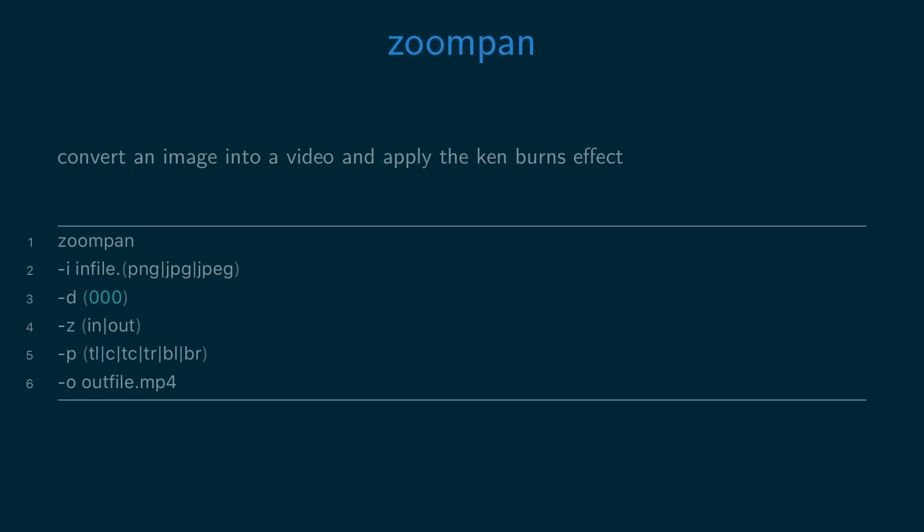The zoom pan script applies the Ken Burns effect to an image. Run the zoom pan script with the dash I option and then the path to an image. The dash D option is used to specify the duration in seconds of the effect. The dash Z option is used to specify either zooming in or out of the image. And the dash P option is used to specify the position in the image to zoom in or out of.